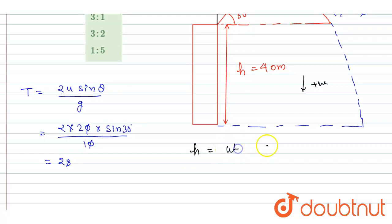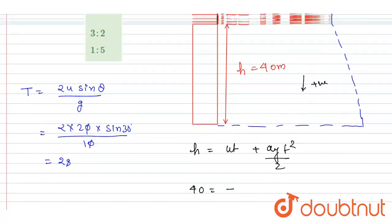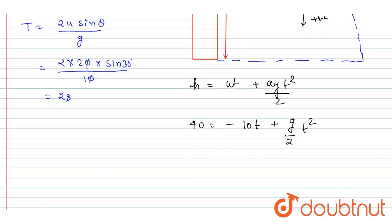It is equals to ut plus half aᵧ t squared. Now you can put the value, h here is 40. Initially u was in upward direction and if you see we already got it is 10 meters, so I will put a negative sign with 10, plus half g, so g is 10, right? So let me write it here, half g t squared. So from here I will get this.